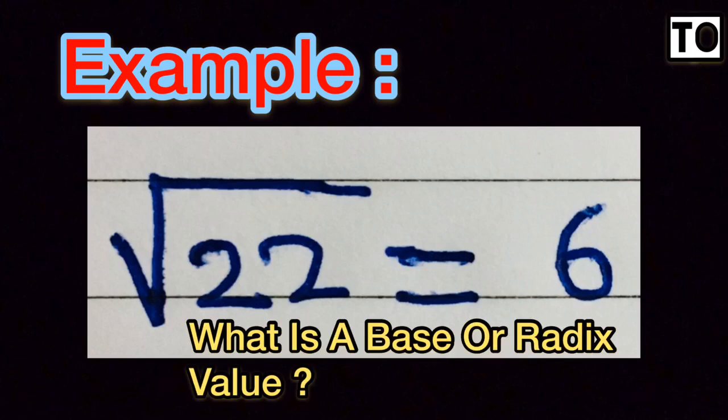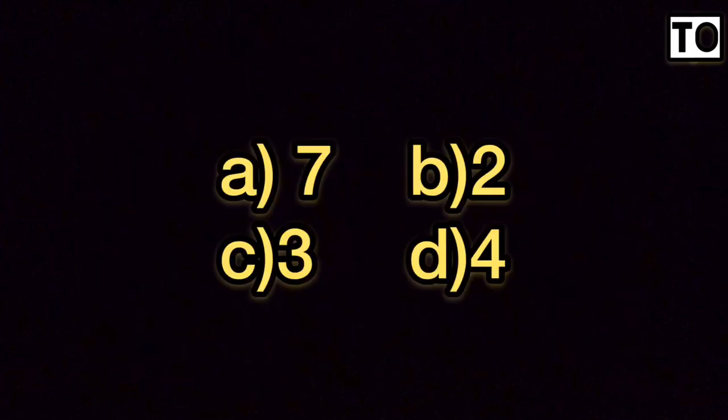If you want to find the base radix value, you can use a technique. Because you have root 22 equal to 6, you need to choose from the options: A) 7, B) 2, C) 3, D) 4. We are going to determine which option is correct.